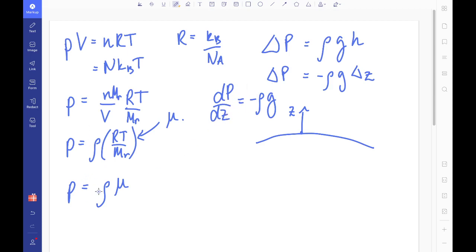Okay, so what we're going to do now is rearrange this to solve for a function of pressure with this coordinate z. So I can write pressure divided by this mu, this constant, is now equal to my rho. So if I insert that in this equation, I can now say dp dz is equal to minus p over mu times g.